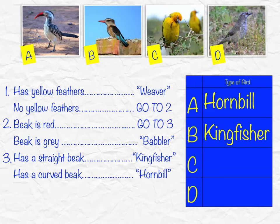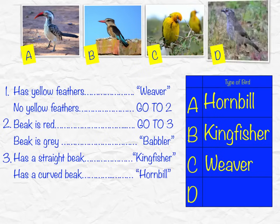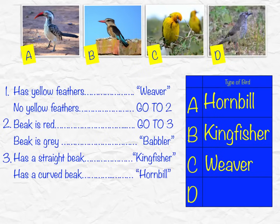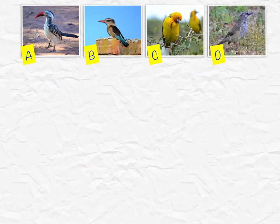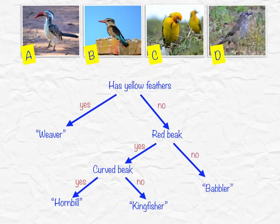For D, does it have yellow feathers? No. Does it have a red beak? No. Does it have a gray beak? Yes — so we know this one's a babbler. There is another way that these keys can be laid out; it's just a question of using arrows and answering with yes or no statements.